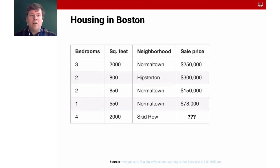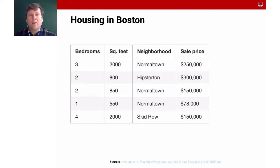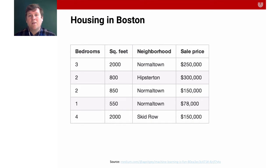We want to be able to give our model a number of bedrooms, a number of square feet, and a certain neighborhood to then make a prediction about the sale price. In this lecture, like with the classification lecture, we will consider different approaches. We will look at the K nearest neighbors approach, which I find quite intuitive because it's very close to the data. And then we will also consider other modeling approaches where we try to more explicitly model the data and its distribution.